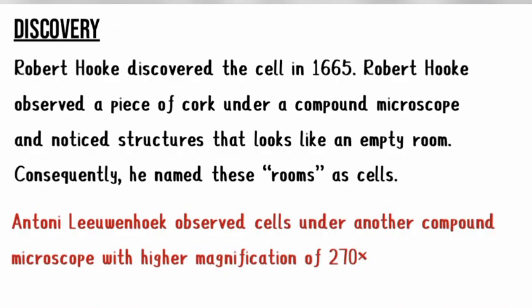Robert Hooke did his experiment in 1665 and viewed a piece of cork under a microscope. He noticed structures that looked like empty rooms, and he decided to call these empty rooms 'cells.' The microscope he used had a very low magnification power, which led another scientist, Antoni van Leeuwenhoek, to use a microscope with a higher magnification power of 270 times the real size of the specimen. He viewed cells under this microscope and got a clearer view.